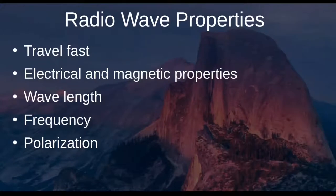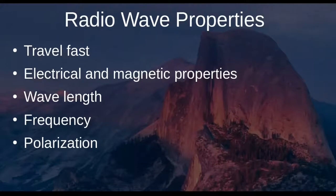In the next series of slides we'll cover radio wave properties. Radio waves travel fast, and they have properties of both electrical and magnetic fields. They also have the properties of wavelength — all waves have a certain length and a certain frequency — and also what's called polarization.